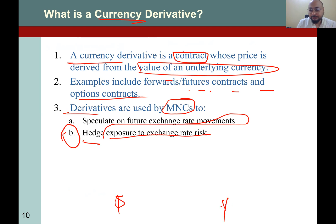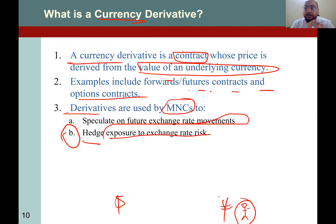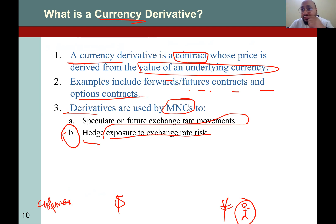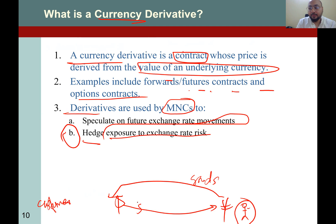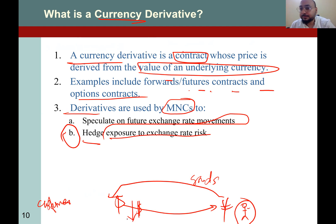Let's take an example: dollar versus yuan. You are a finance manager of an MNC. From the customer perspective — your customer is in the US, you send goods, and you receive dollars which will be converted into yuan. The biggest risk here is that the dollar will depreciate, meaning when you convert to yuan you will receive less yuan.